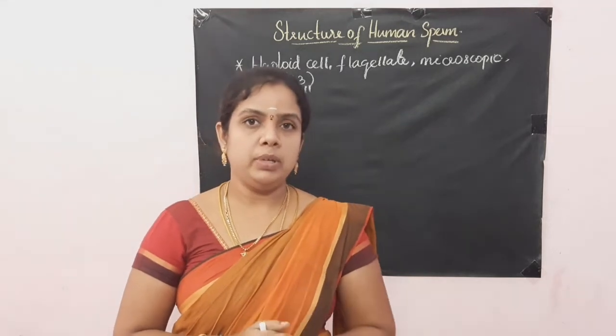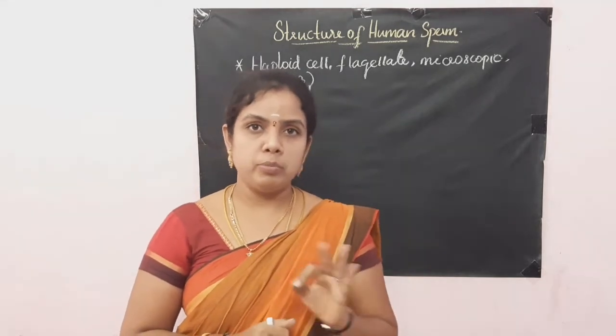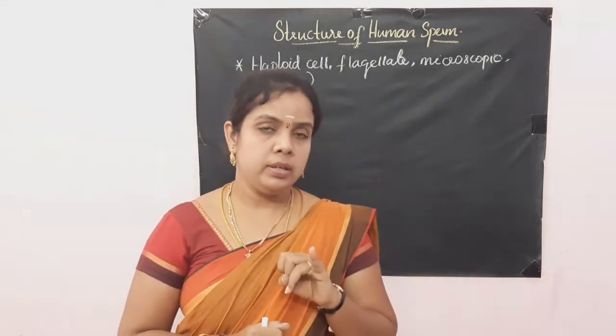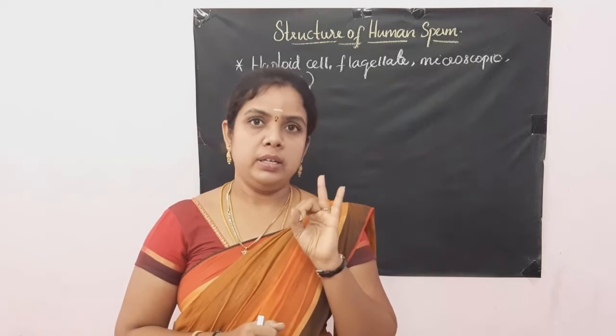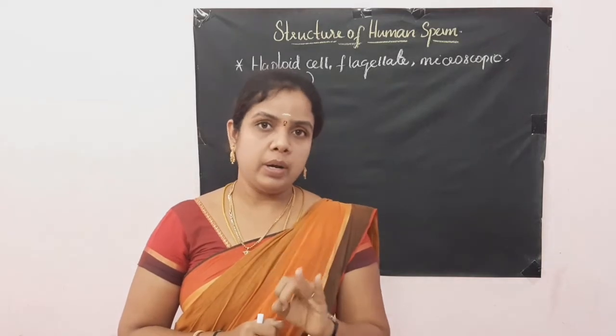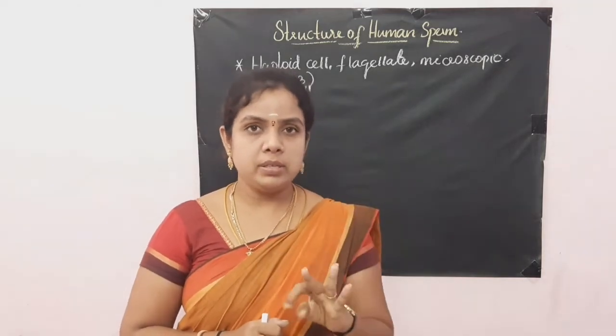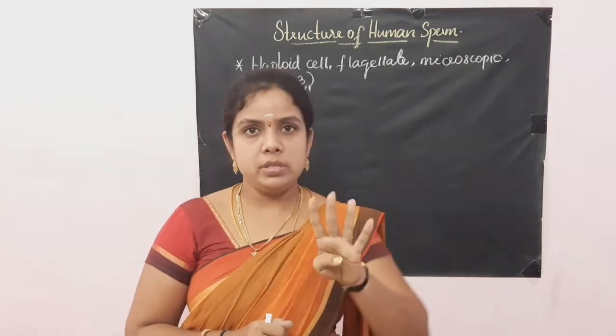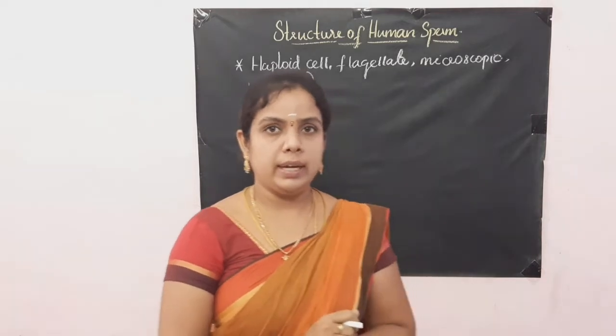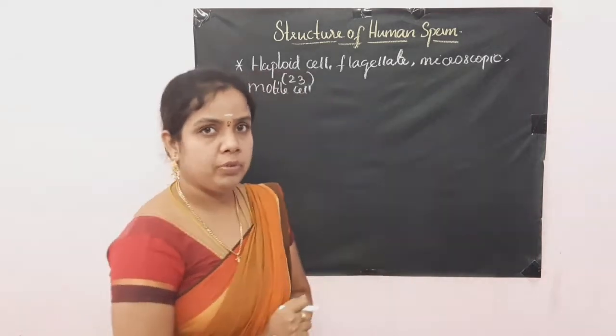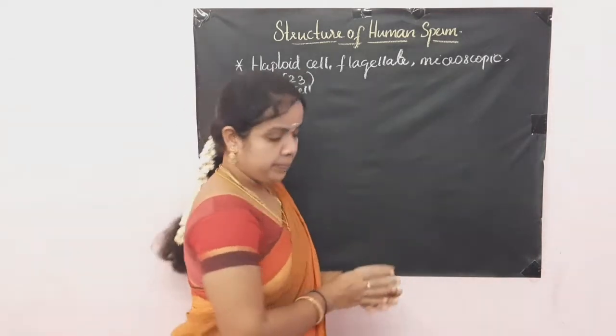Human sperm consists of 4 main parts. One is the head, and second is the neck part. Third is the middle piece and the fourth is the tail part. So let us draw the diagram of human sperm.